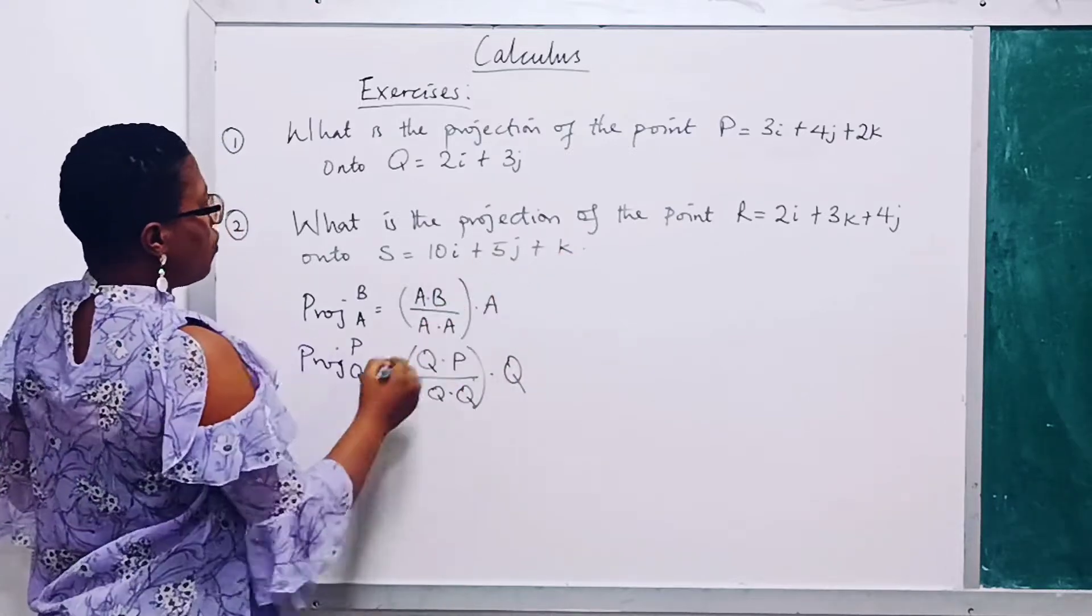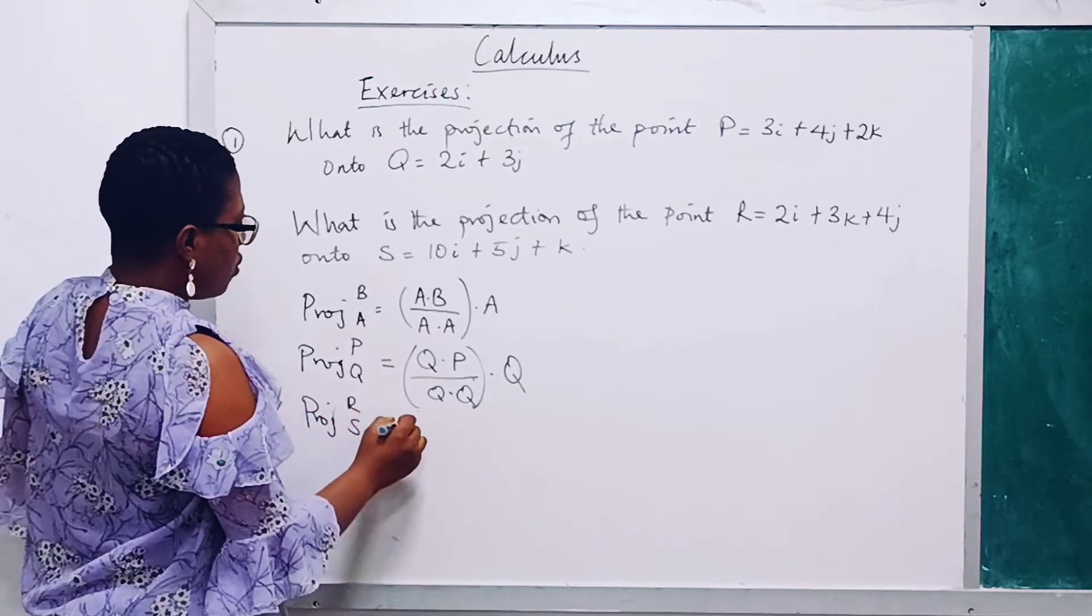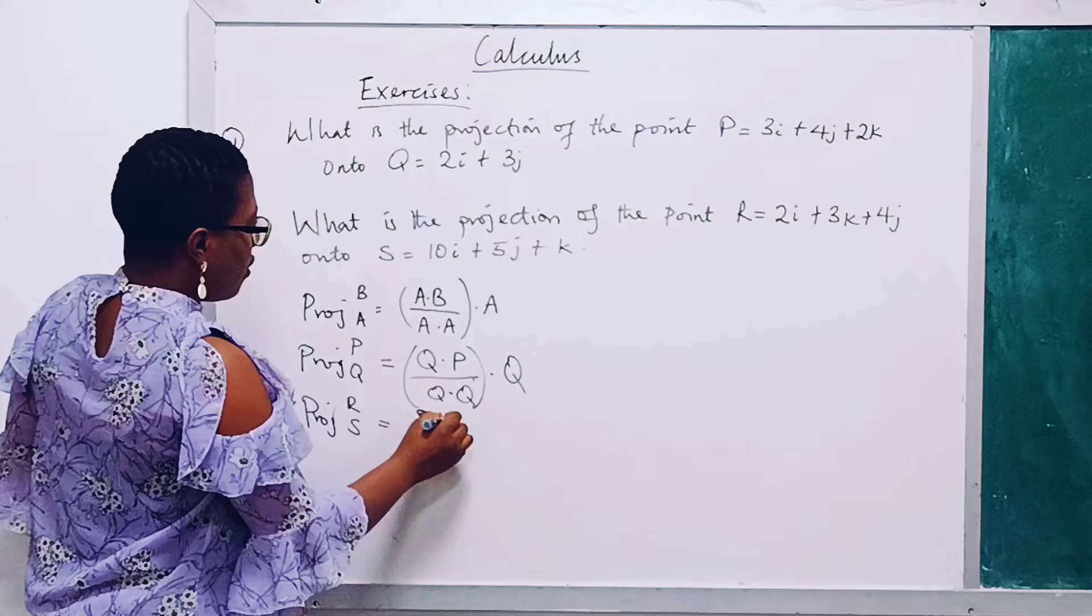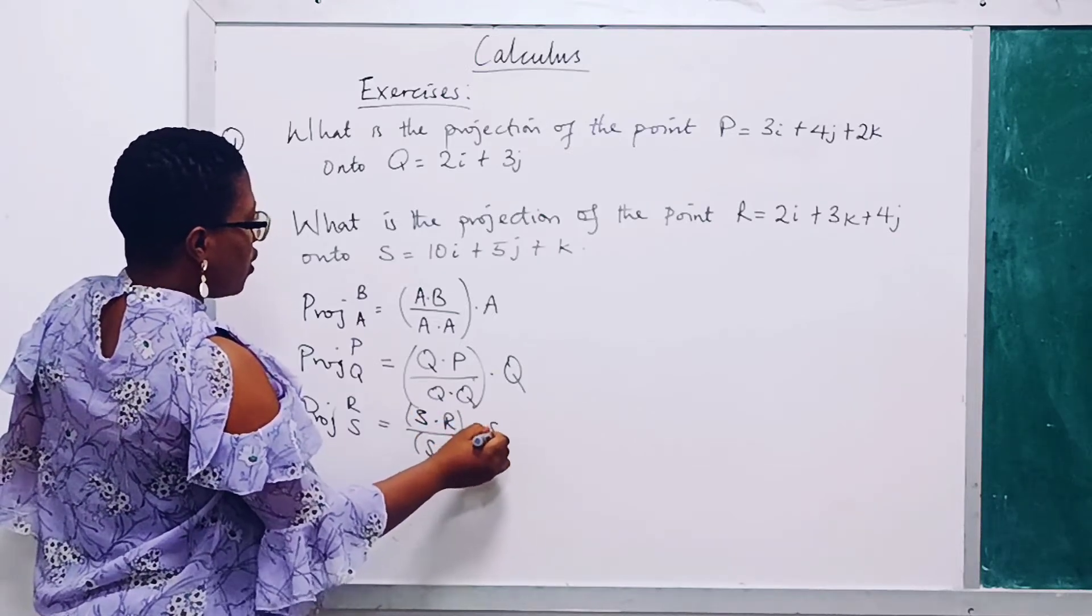And for the second one, you have projection of R on S to be equal to S dot R over S dot S dot F.